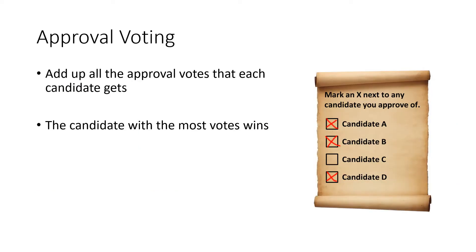So how do we use an approval ballot to determine the winner of an election? All we do is add up the number of votes that each candidate got, and the candidate with the most votes wins.